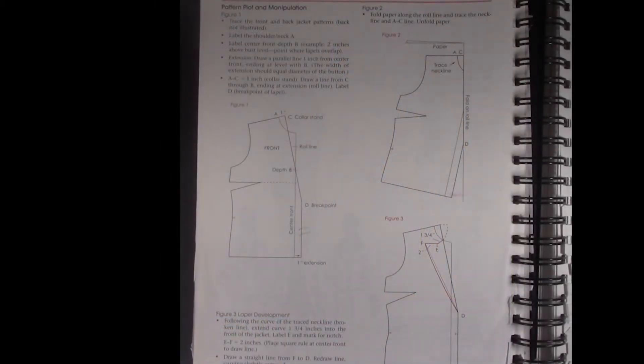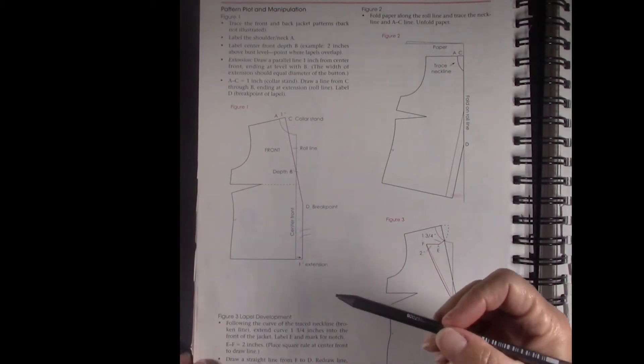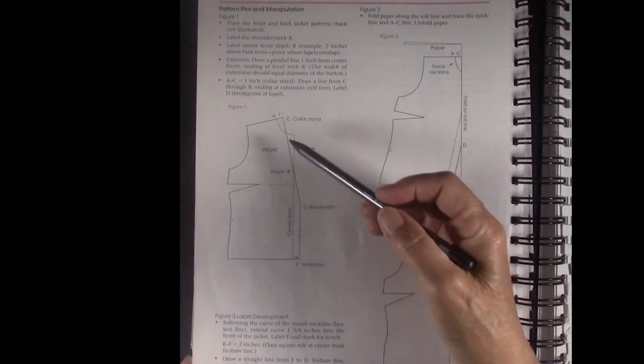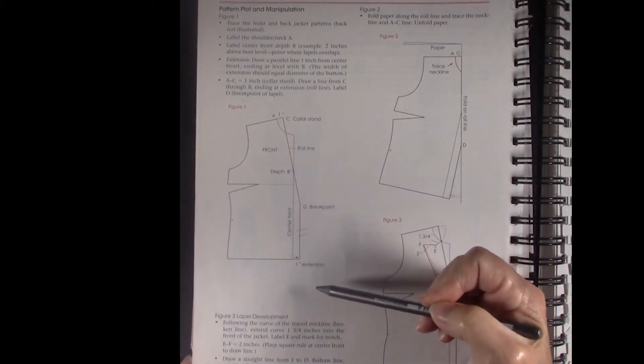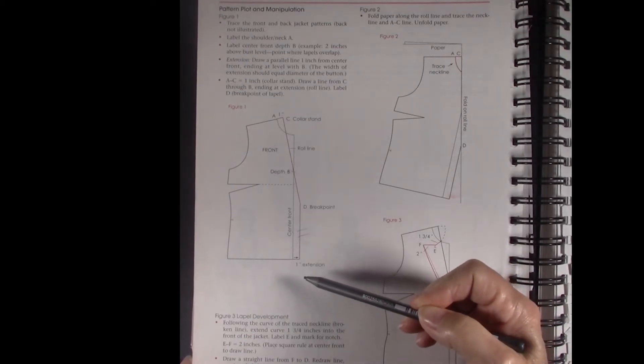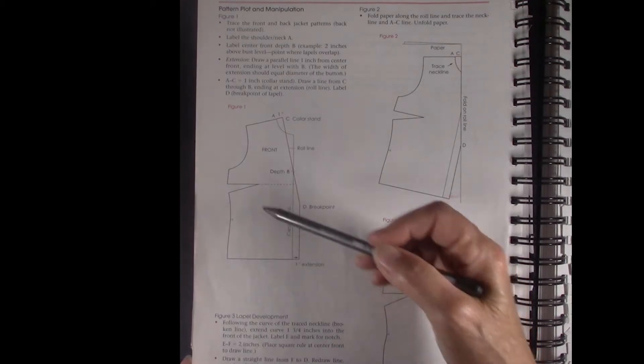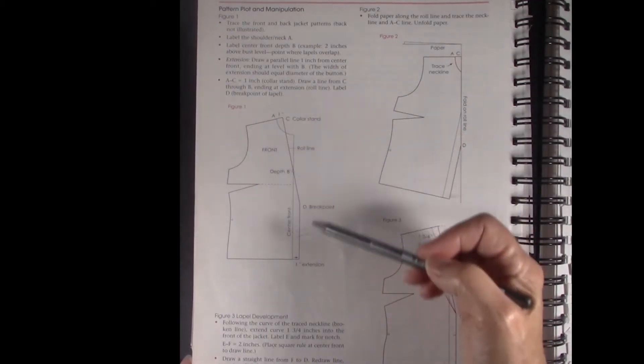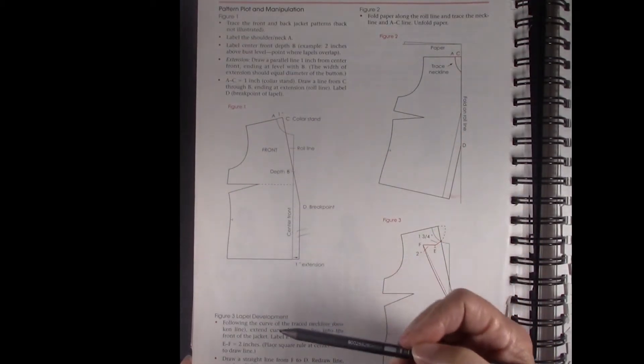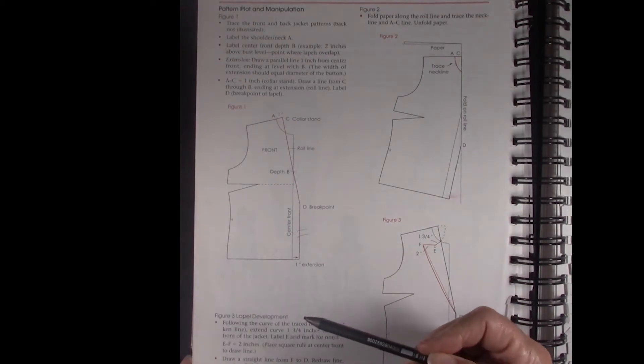We're going to start with a quick review of drafting a lapel and a collar. So I'm on page 468, this is chapter 22. We start out by working with our jacket sloper in which your armholes have been lowered and there's been all kinds of adjustments to make sure that the jacket will go over another garment.